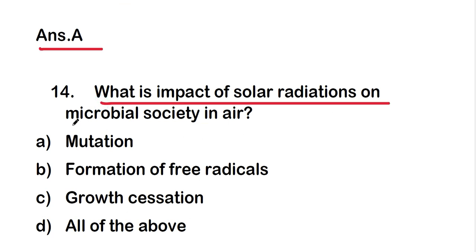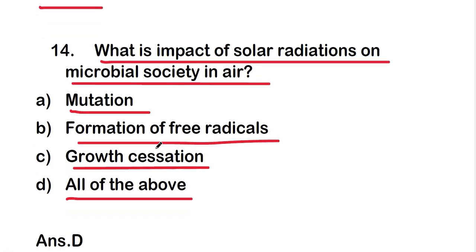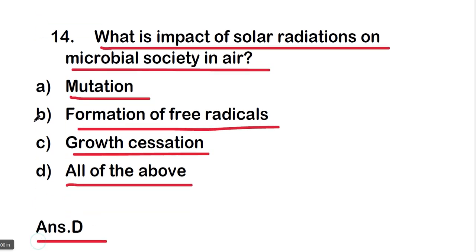Next question: what is the impact of solar radiations on microbial life in air? The options are mutation, formation of free radicals, growth cessation, or all of the above. The right answer is option D, all of the above. Mutation, formation of free radicals, and growth cessation are all impacts of solar radiation on microbial life in air.